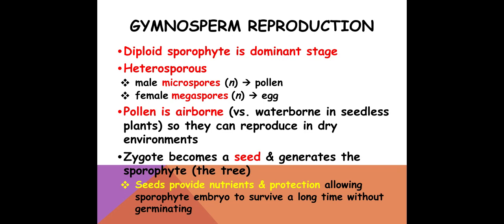This is a huge evolutionary advantage compared to waterborne seedless plants, because with pollen we can have reproduction in more dry conditions. If you look at pollen from gymnosperms, you'll see that they're sort of winged, so the air is moving the pollen around. Living here in the low country, we see this every spring — our cars all get covered in yellow pollen from pine trees. Seeds are also a great evolutionary advantage because they provide nutrients and protection to the sporophyte, and a seed can survive a much longer time without germinating, giving more protection than spores.